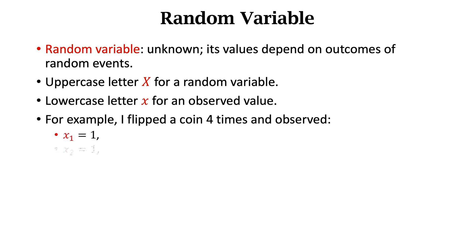For example, I flipped a coin four times and observed four values: X1 equal to 1, X2 equal to 1, X3 equal to 0, and X4 equal to 1. The four lowercase letters are observed values. Don't confuse random variables with observed values.